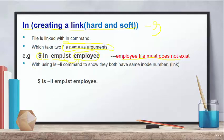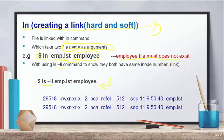To check whether the link was created, use the ls -li command to show that both files have the same inode number. First link the original file to the new file with the ln command, then check with ls -li. When you press enter, it gives you the inode number — both files should show the same inode number.